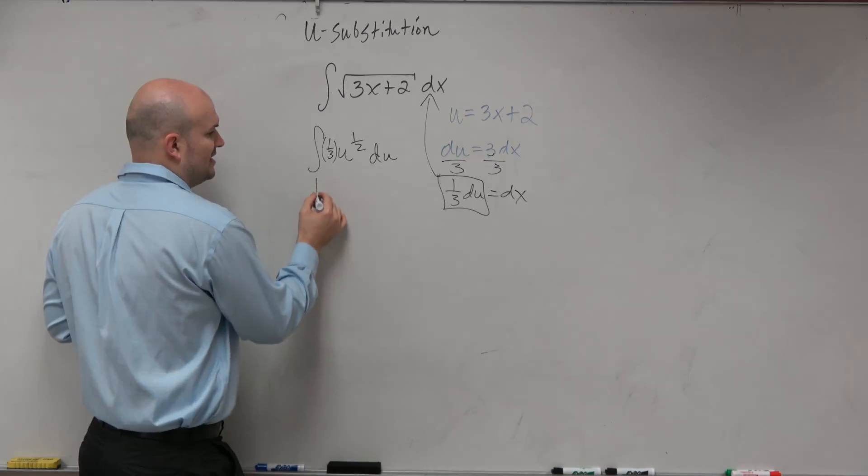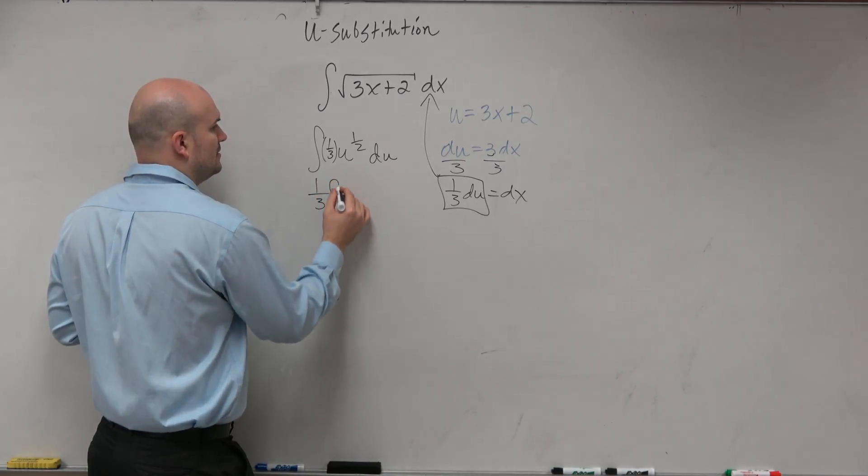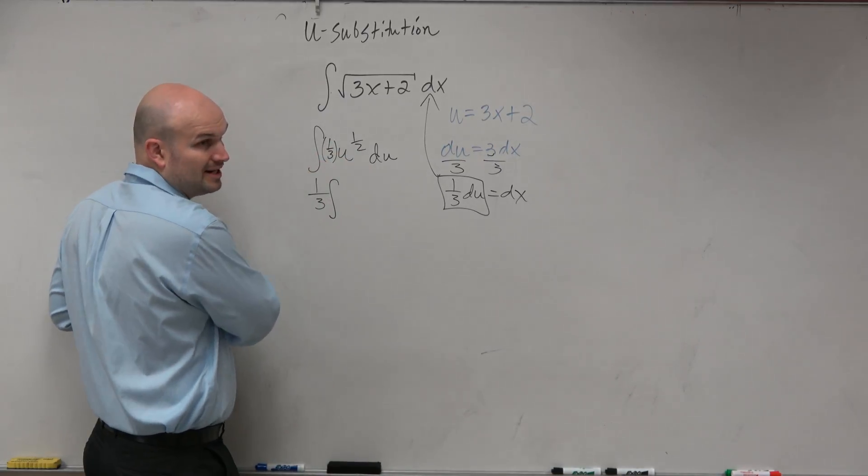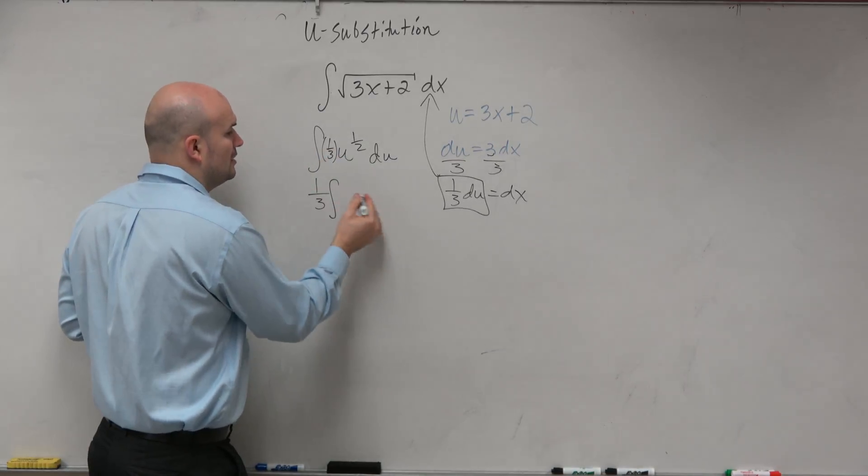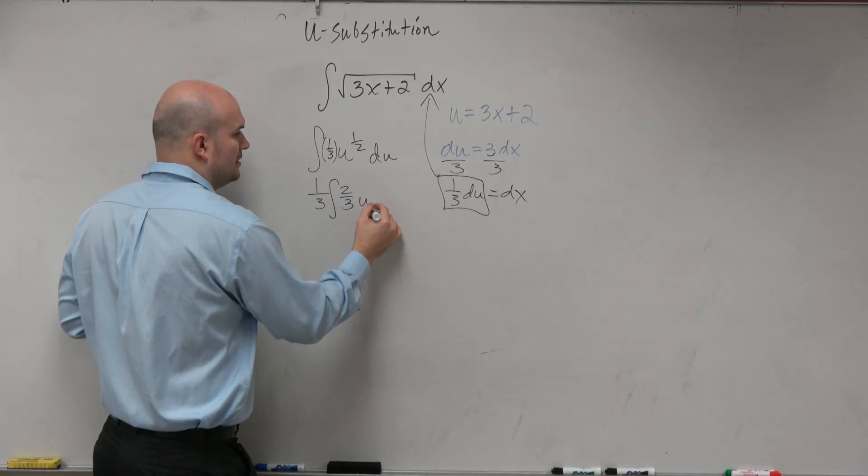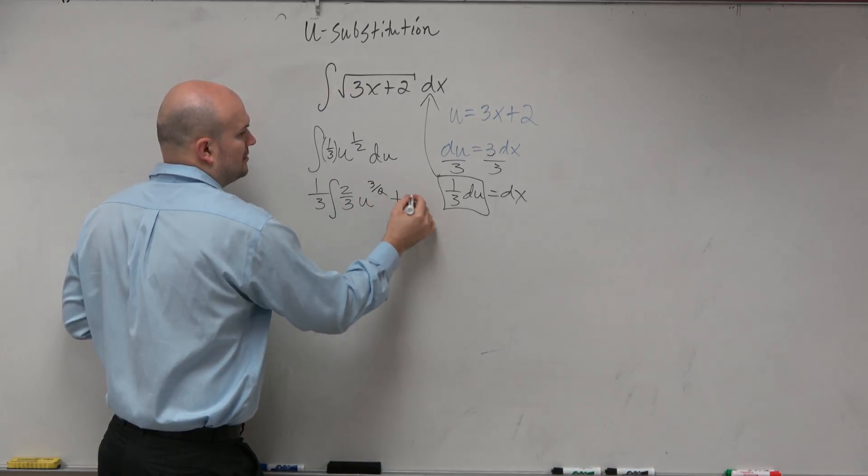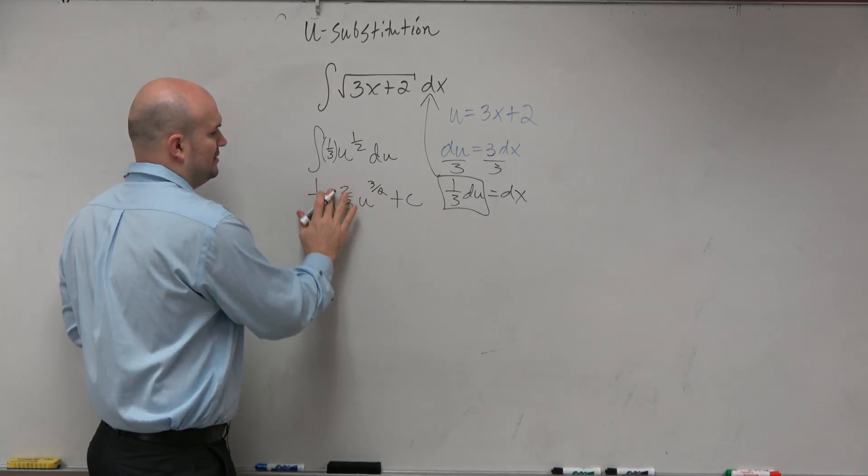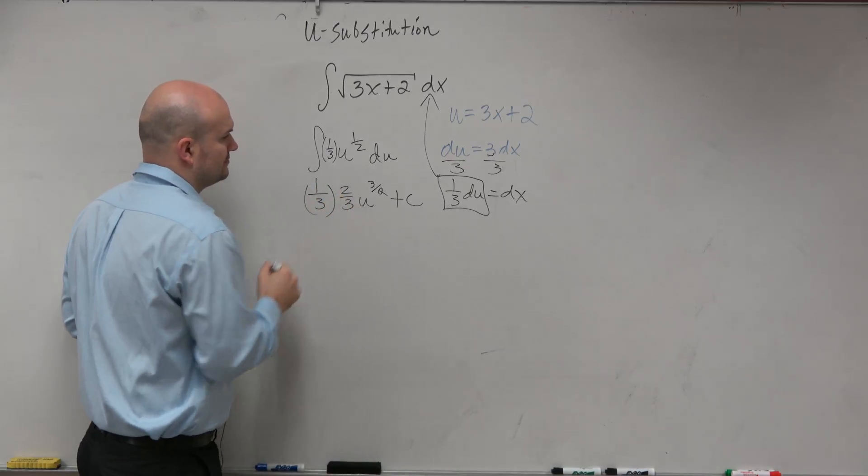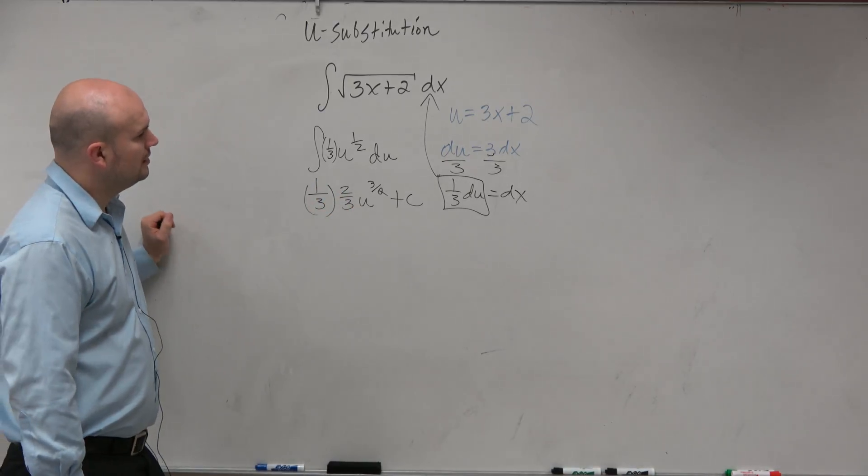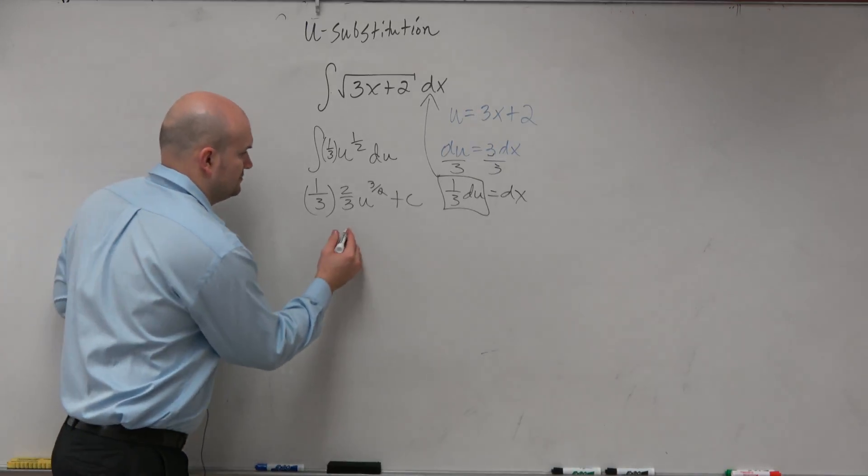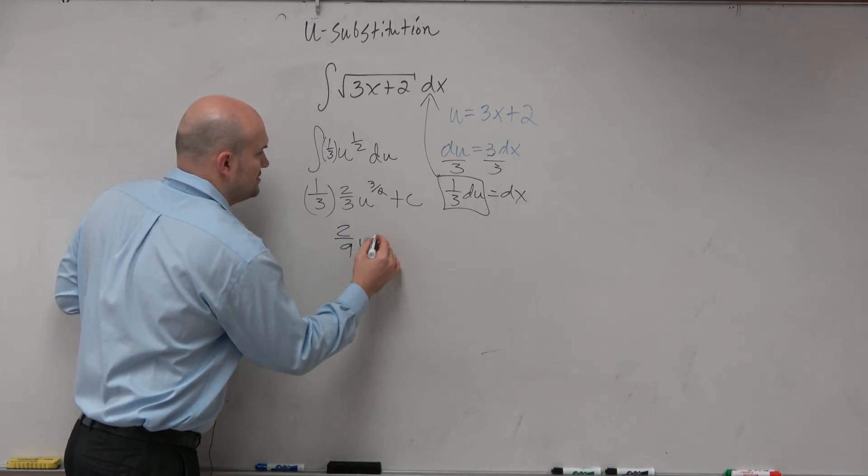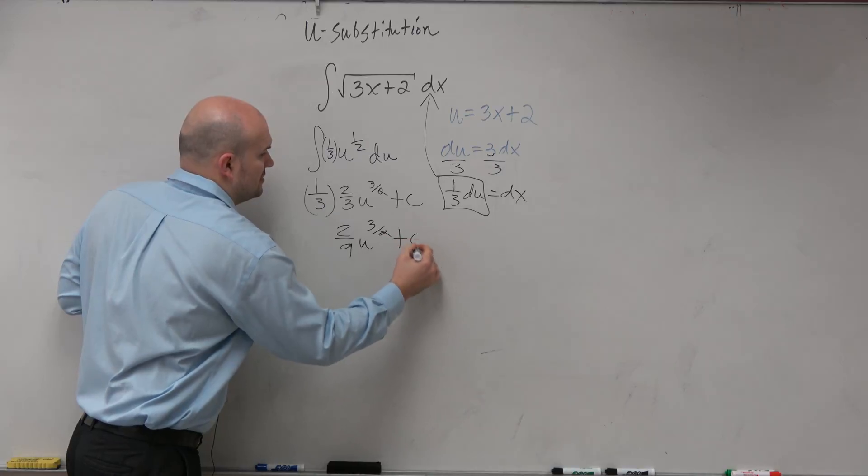So obviously, I can take out this constant. Now I can just integrate this. So I'm going to add 1. So that's going to be 3/2 multiplied by the reciprocal. And you get 2/3. Good job. u to the 3/2 plus c. Oops. I integrated, so I don't need that anymore. And then we just simplify. 2/9 u to the 3/2 plus c.